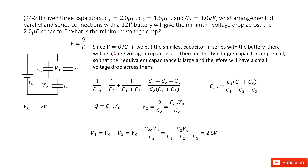In this system, we have three capacitors: C1, C2, and C3. We need to determine the arrangement of parallel and series connections with the 12V battery to get the minimum voltage drop across the two micro-farad capacitors.